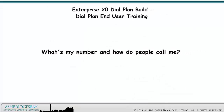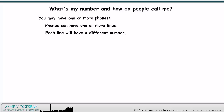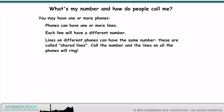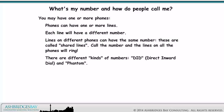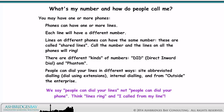What's my number and how do people call me? You may have one or more phones, and phones can have one or more lines. Each line will have a different number. Lines on different phones can have the same number — these are called shared lines. There are different kinds of numbers: DID (direct inward dial) and phantom numbers. People can dial your lines in different ways: site abbreviated dialing, dial using extensions, internal dialing, and from outside the enterprise. Think: lines ring, and I called from my line.